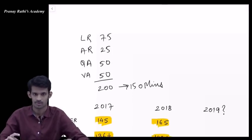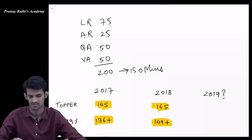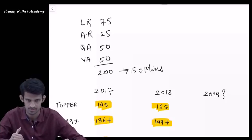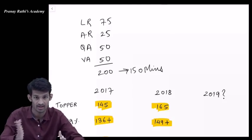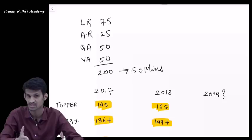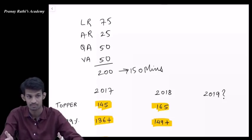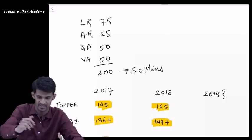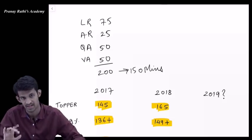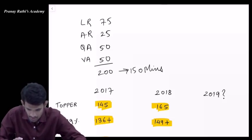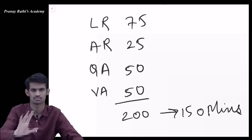This is my paper: logical reasoning, abstract reasoning, quants, and verbal. When we have four sections, we will see deep bifurcation in logical reasoning like how many arrangements, puzzles, syllogisms, critical reasoning. In quants, data interpretation, series completion, data comparison, and data sufficiency. There are so many things, so we should keep the bifurcation in mind.